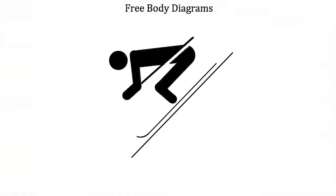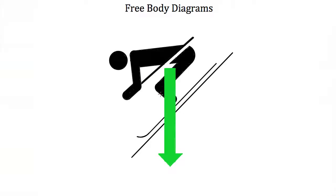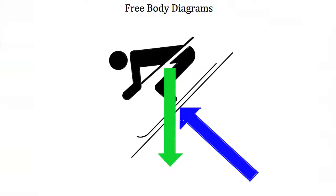Another common example is the skier, who has two forces acting on him. Gravity is always acting on objects, pulling the skier toward the center of the earth. However, the skier doesn't sink through the snow — the snow pushes back, which we call a normal force. Normal forces always push back perpendicular to the surface. Since the skier is on the side of a mountain, the normal force is perpendicular to that slope. This is the free body diagram for the skier: the gravity vector and the normal force vector.